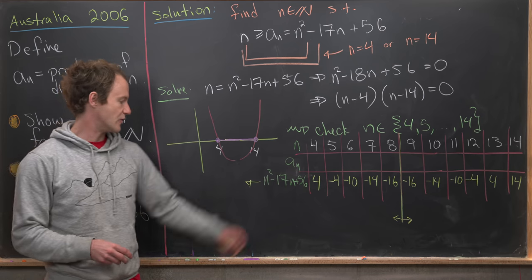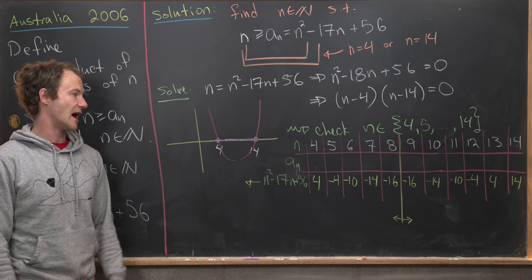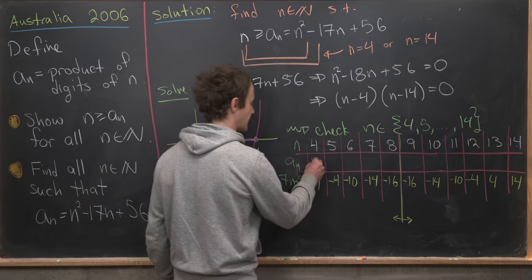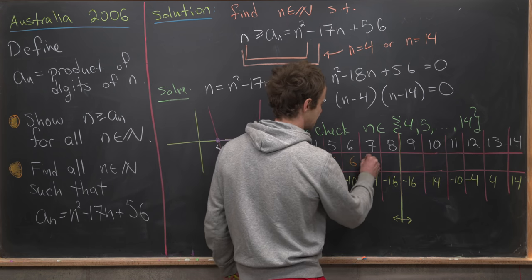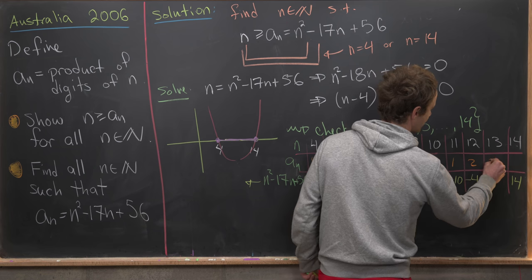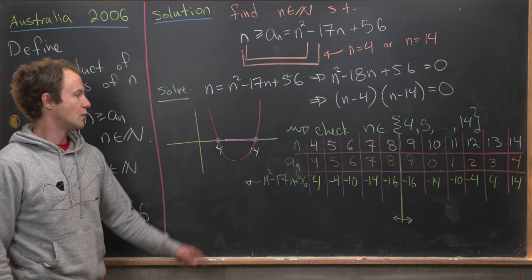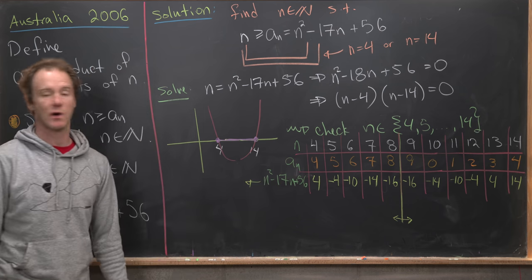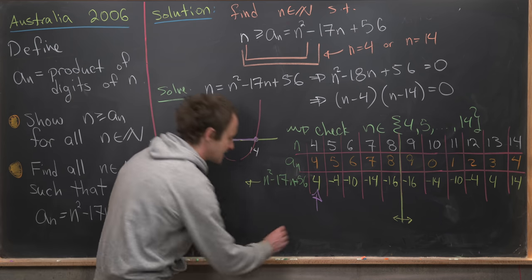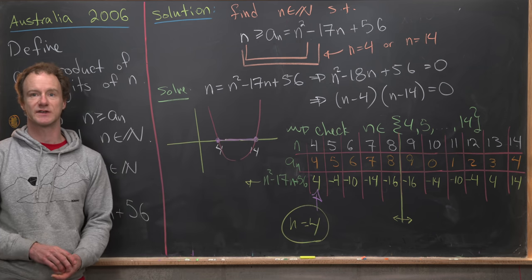Next, we'll look at the value of a_n, which is maybe arguably easier to calculate. We just multiply the digits of n. So notice here we'll get 4, 5, 6, 7, 8, 9, 0, 1, 2, 3, 4. So putting this all together, we see that a_n equals this quadratic polynomial only at this spot right here. So that tells us that n = 4 is our only solution. And that's a good place to stop.